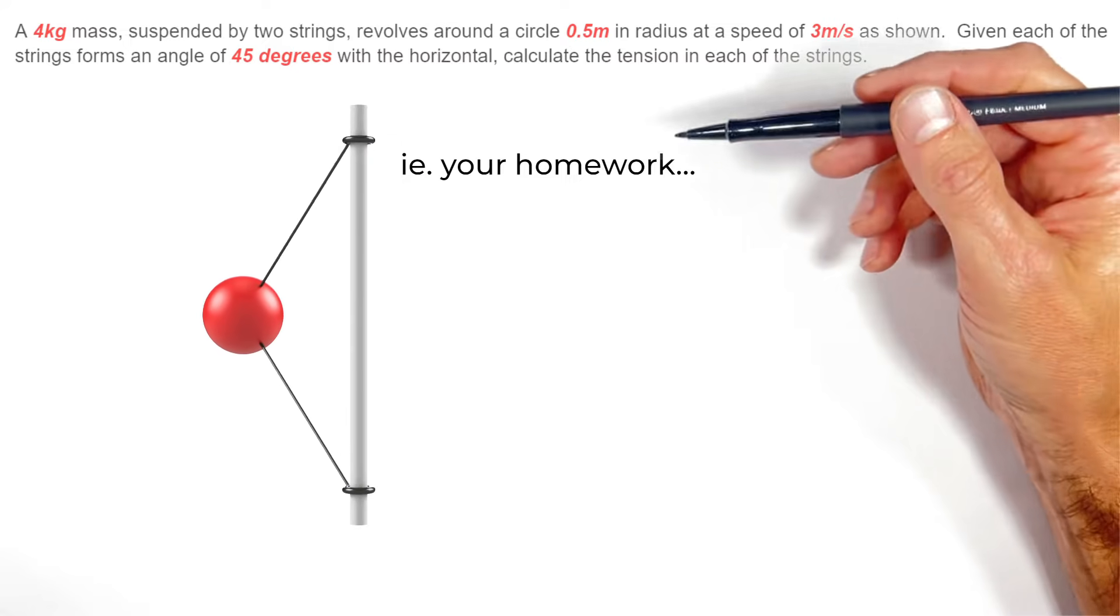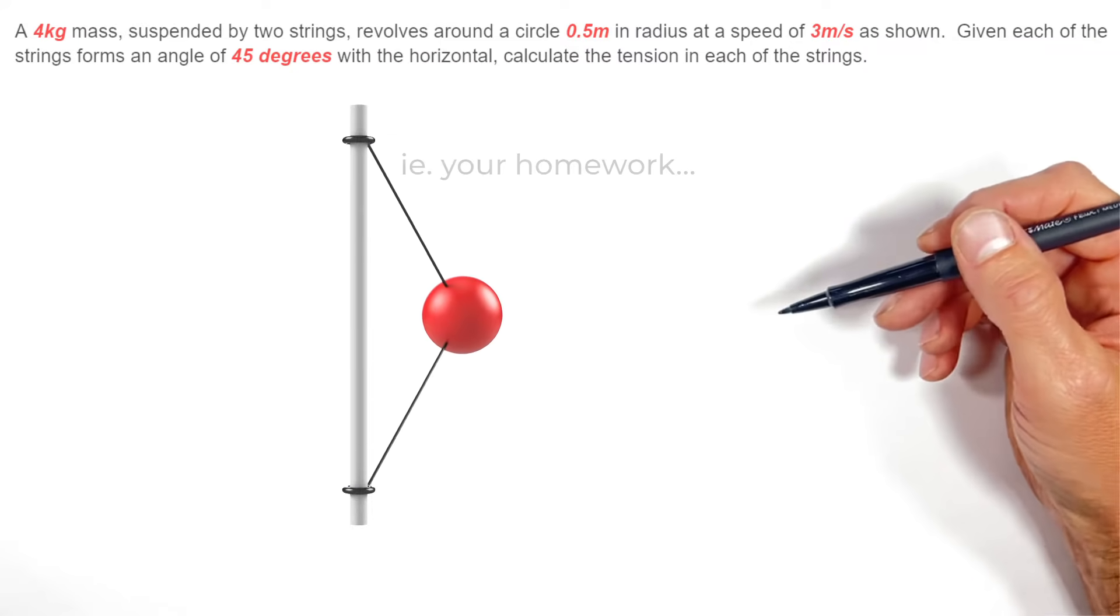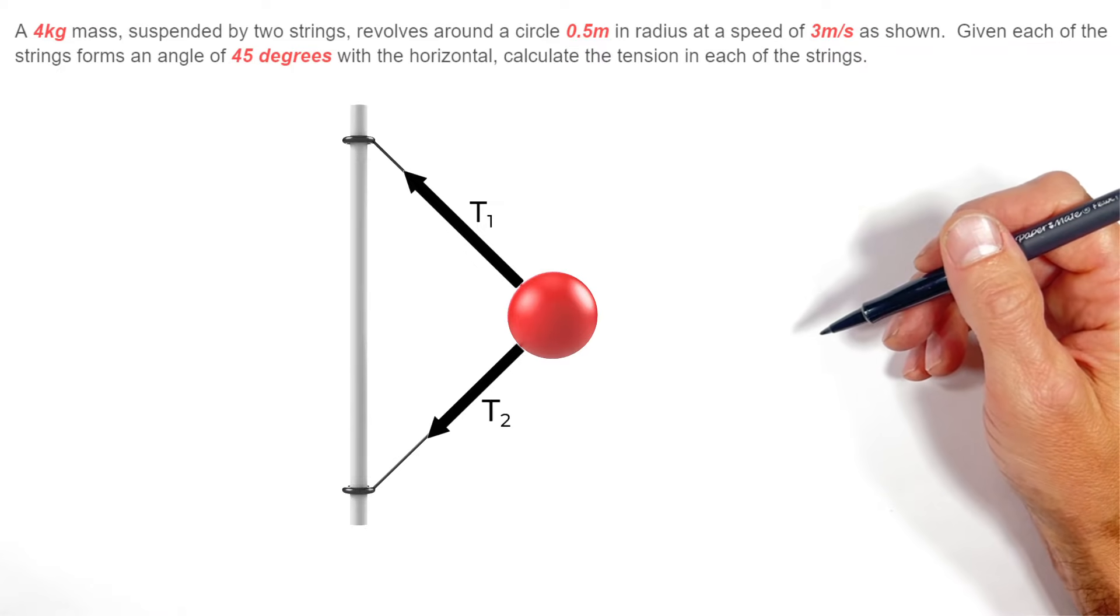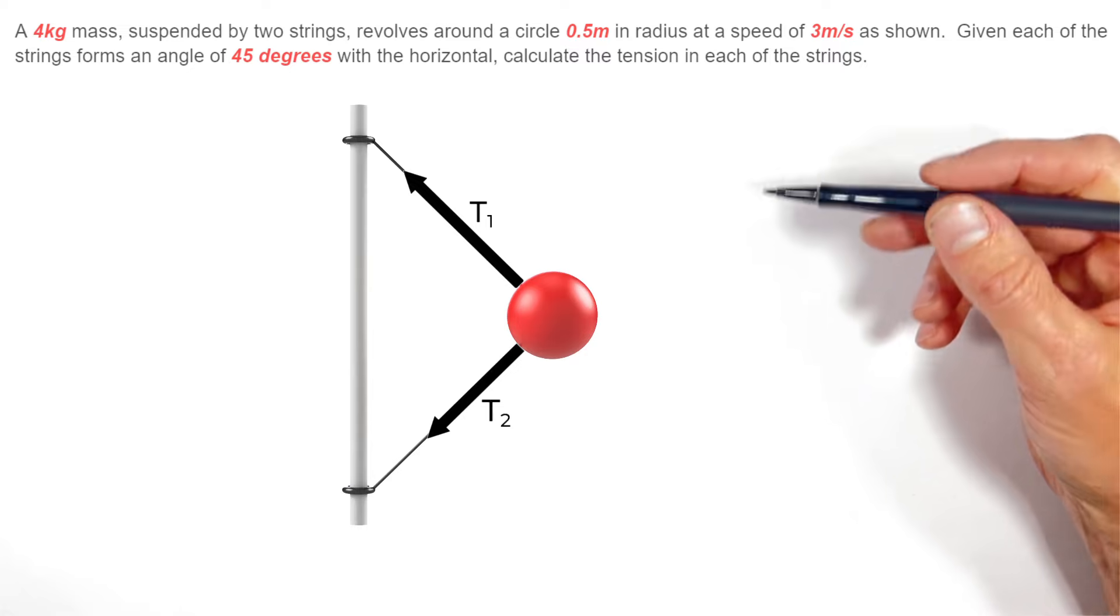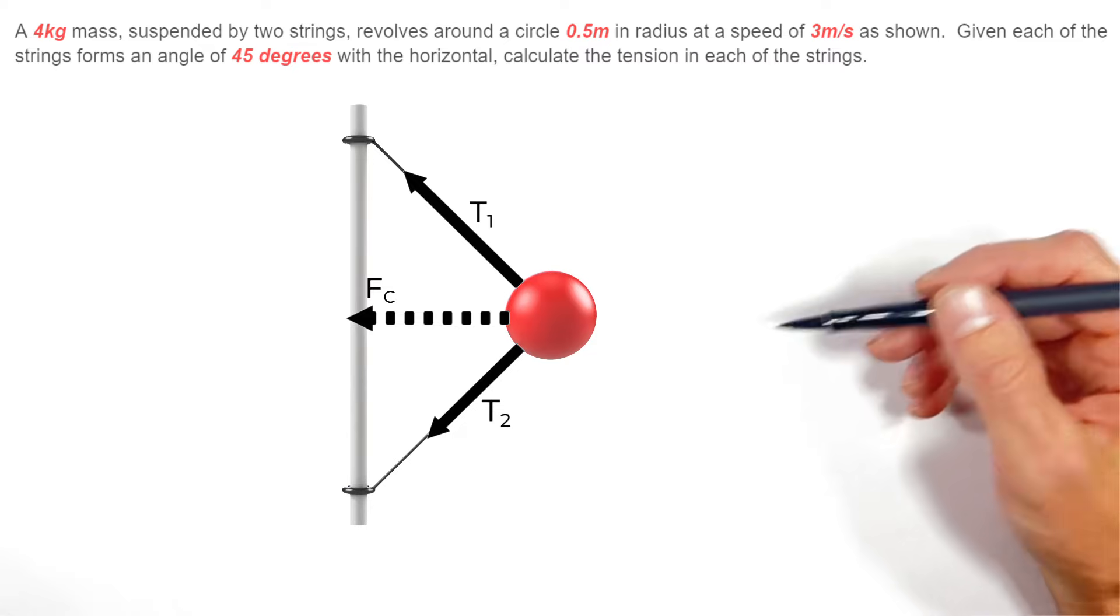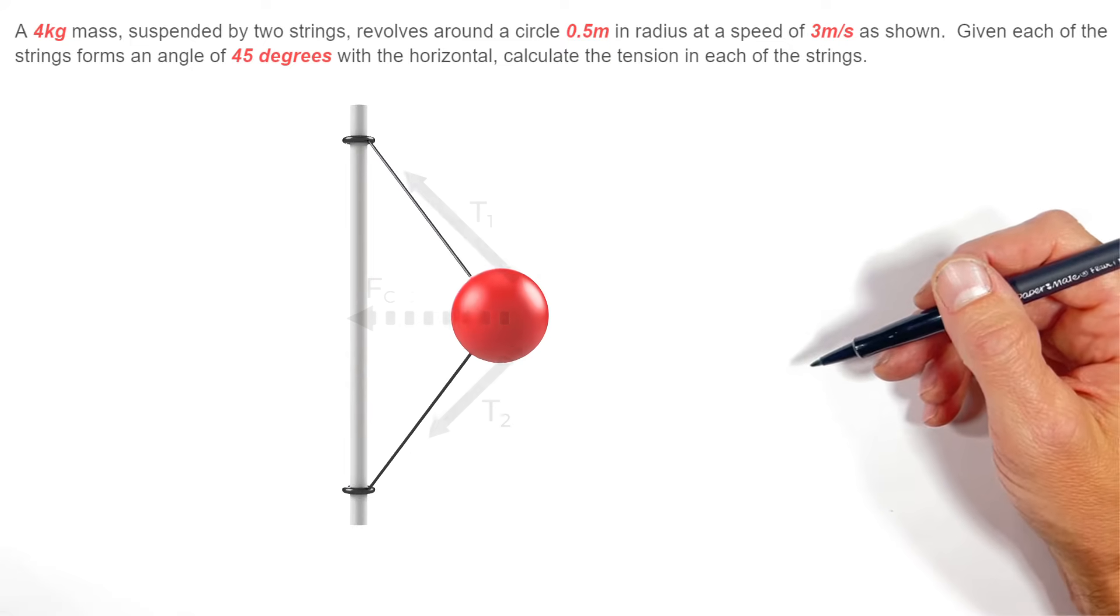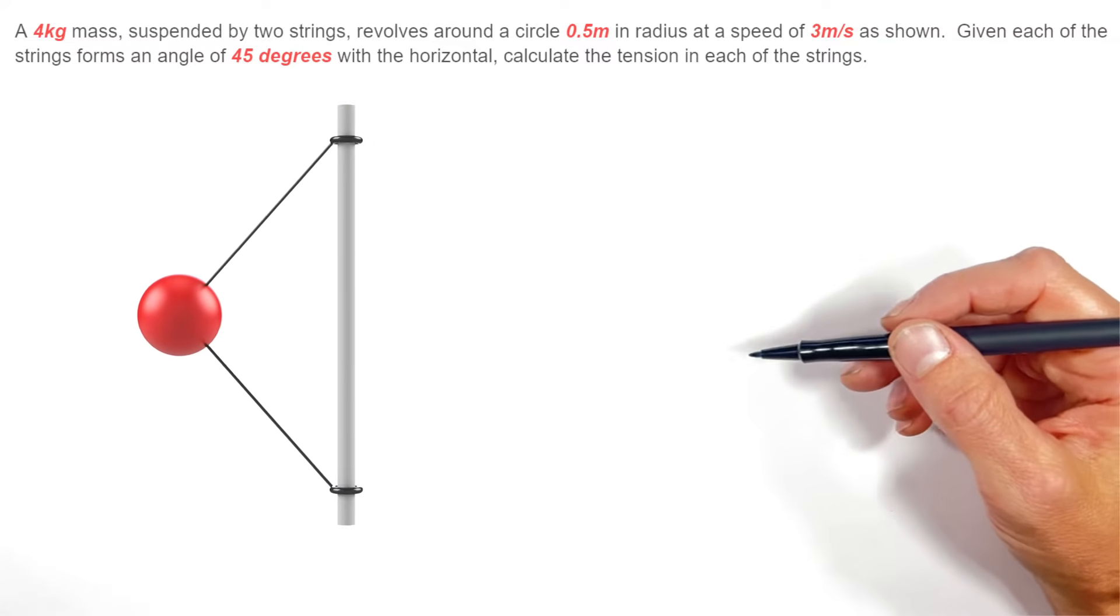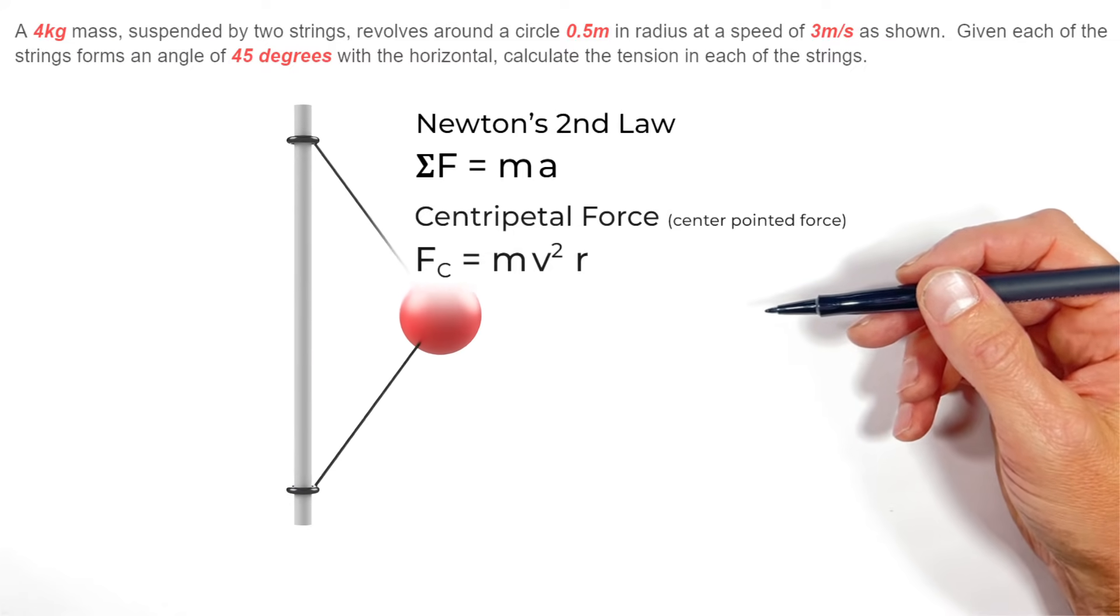Now the whole idea in this problem is that these two strings are acting on the ball, one acting up this way and the other downward diagonally, and when put together those two strings are providing some centripetal force on the ball which is causing it to go in a circle. Really what I'm getting at is that the solution to this problem is entrenched in Newton's second law and centripetal force.